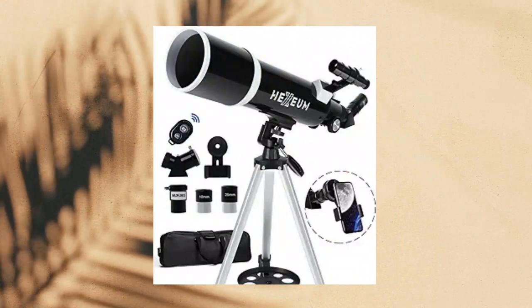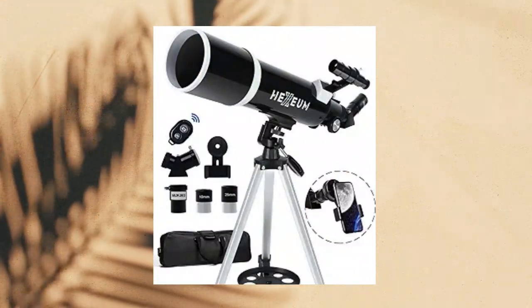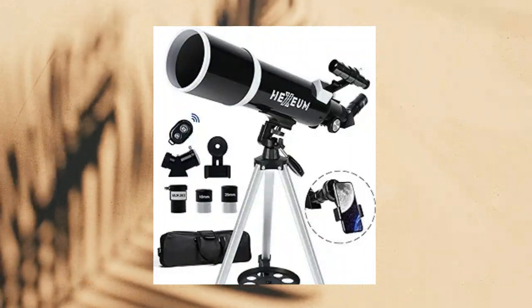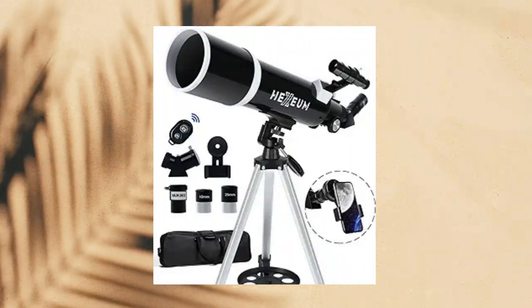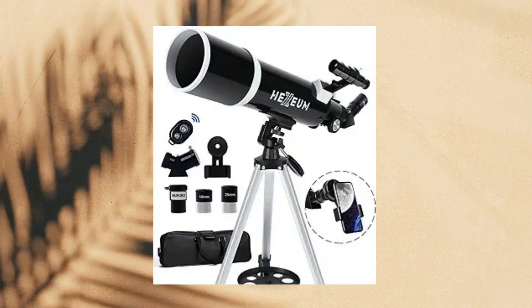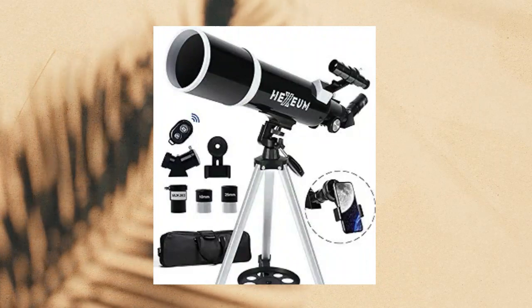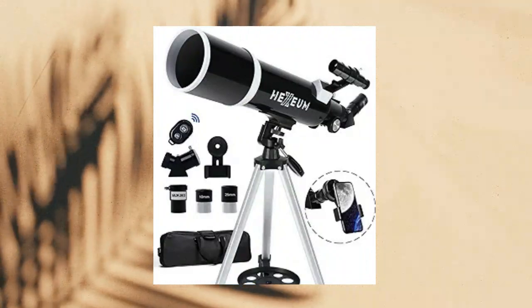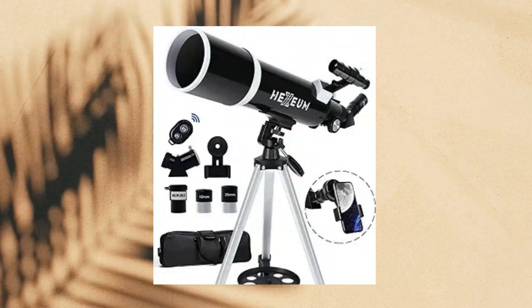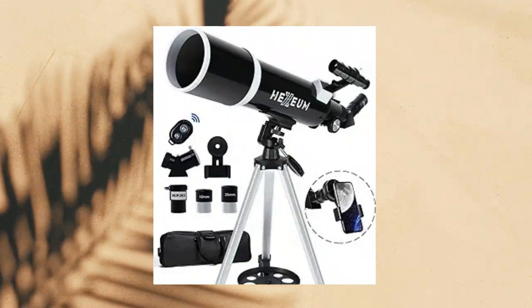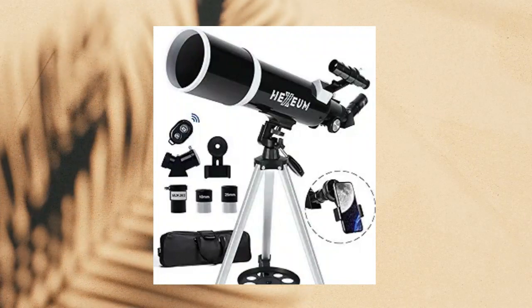Telescope for Adults and Beginner Astronomers. Unlock the Mysteries of the Universe with our 80mm Aperture Telescope. With a 600mm focal-length and multi-coated, high-transmission optics, it offers exceptional image brightness and clarity. Equipped with two quality eyepieces, 25mm and 10mm, a 3x Barlow lens, and a 5x24 finder scope, it delivers magnification and easy object location.